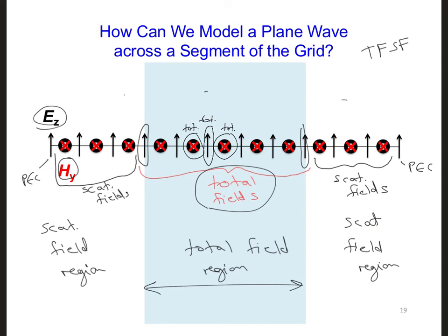However, there is an issue or an inconsistency at the two interfaces between the regions. This EZ component here at the left interface has a total HY on one side, but a scattered HY on the other. And this EZ is a total field.